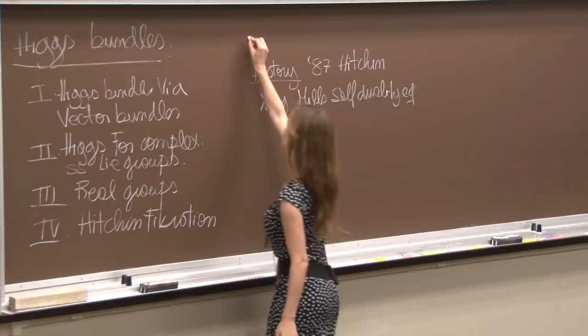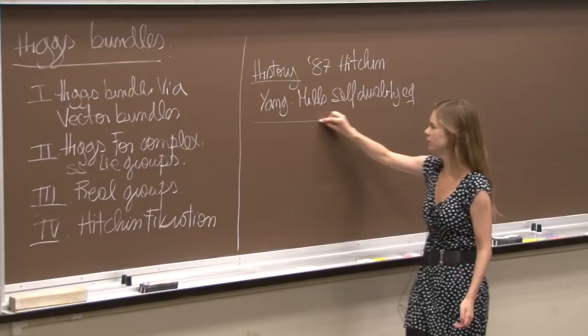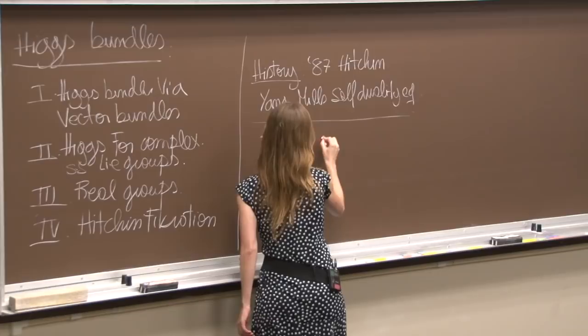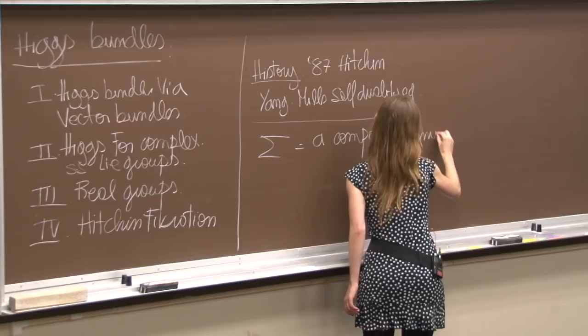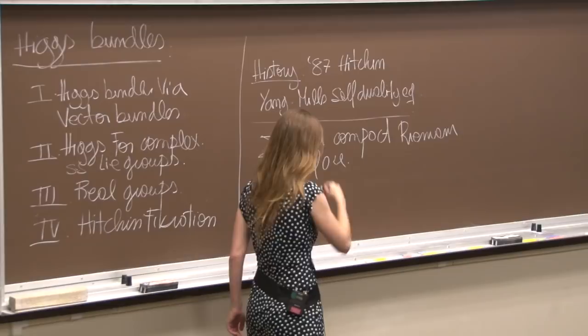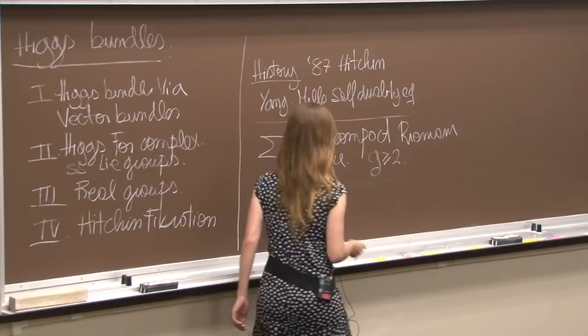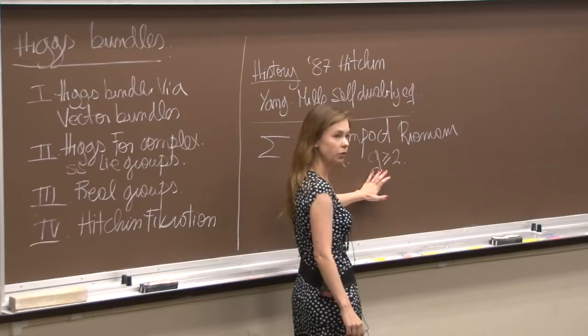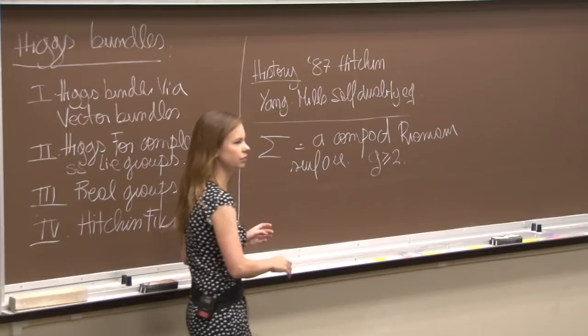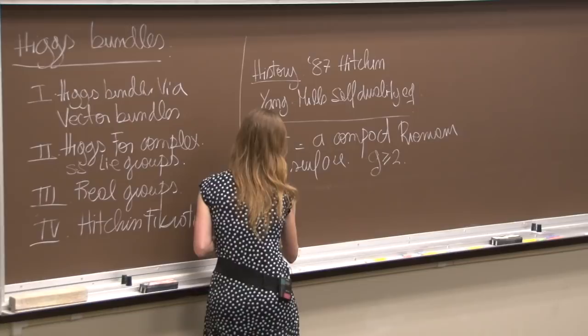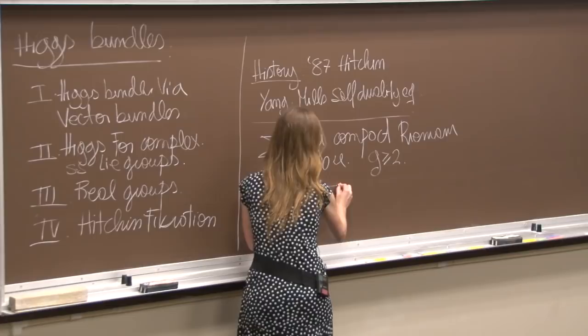So what we're going to do is we're going to work on Riemann surfaces which are compact. I'm going to call Σ a compact Riemann surface, and I want it to have genus at least 2. If you wanted to do what we're going to learn today for genus zero or genus one, you can do it, but you need to start putting punctures or more information on this Riemann surface. We're going to be talking a lot about the cotangent bundle of the Riemann surface. The cotangent bundle of the Riemann surface, we're going to call it K.